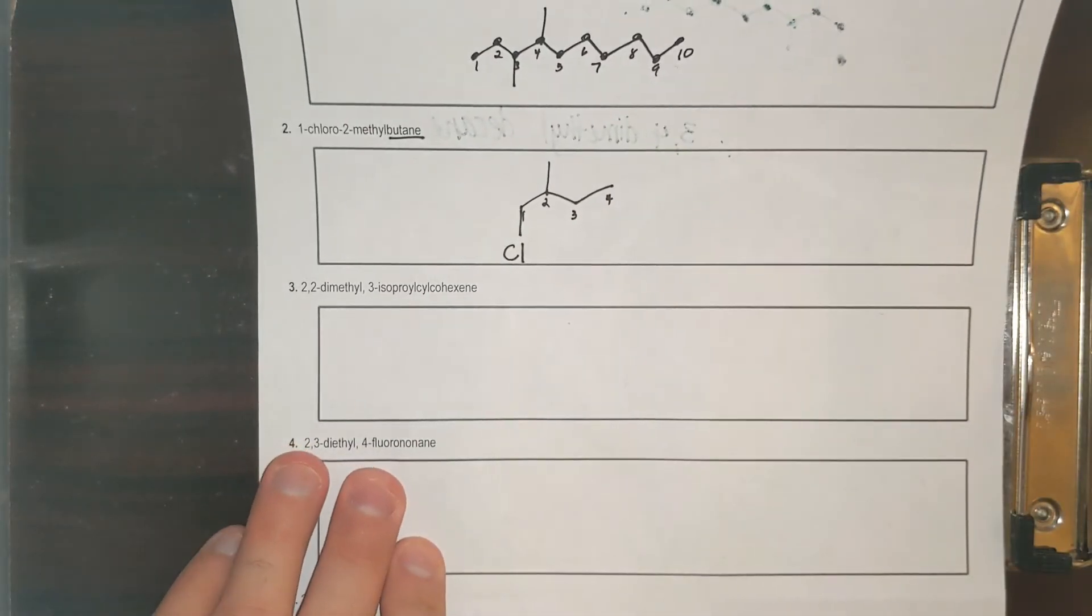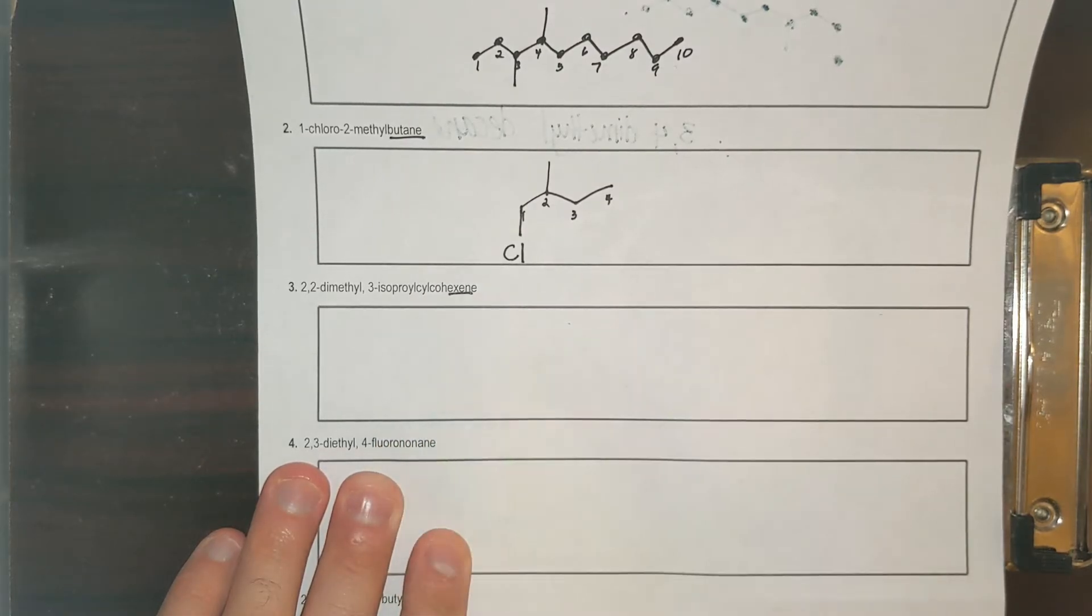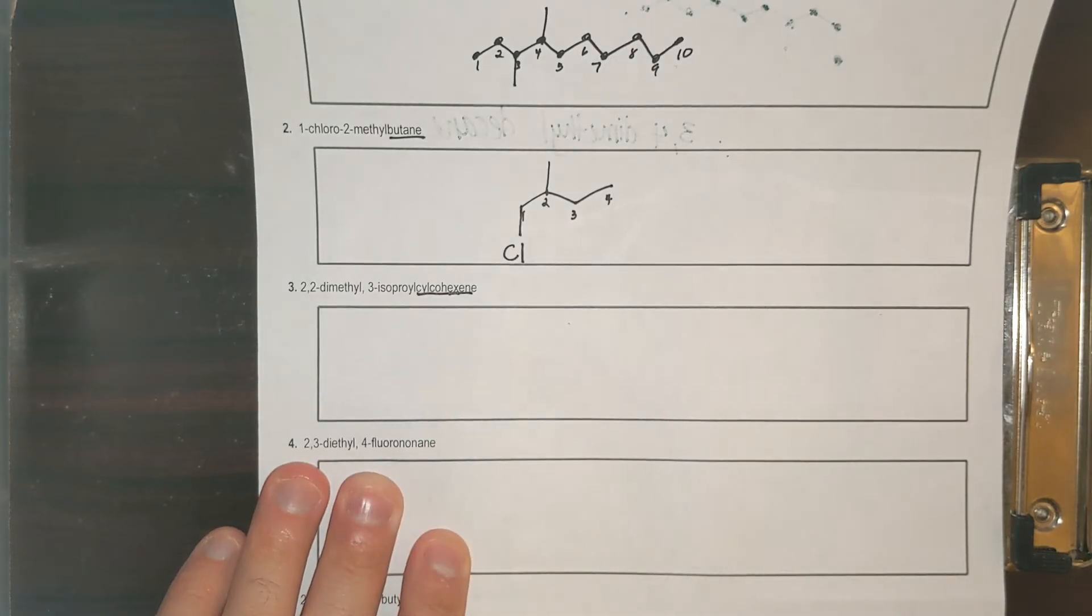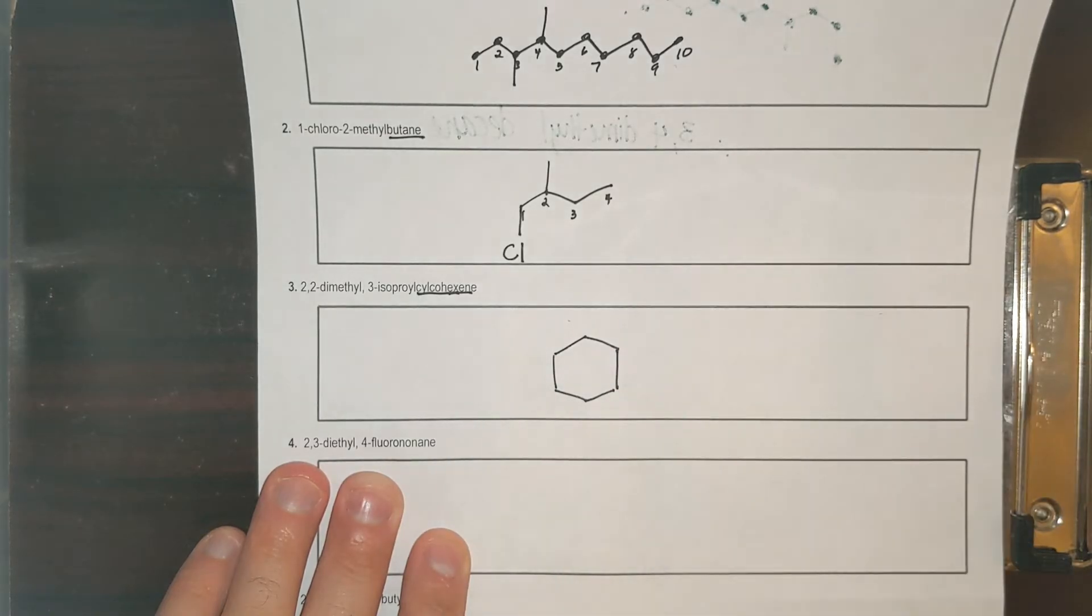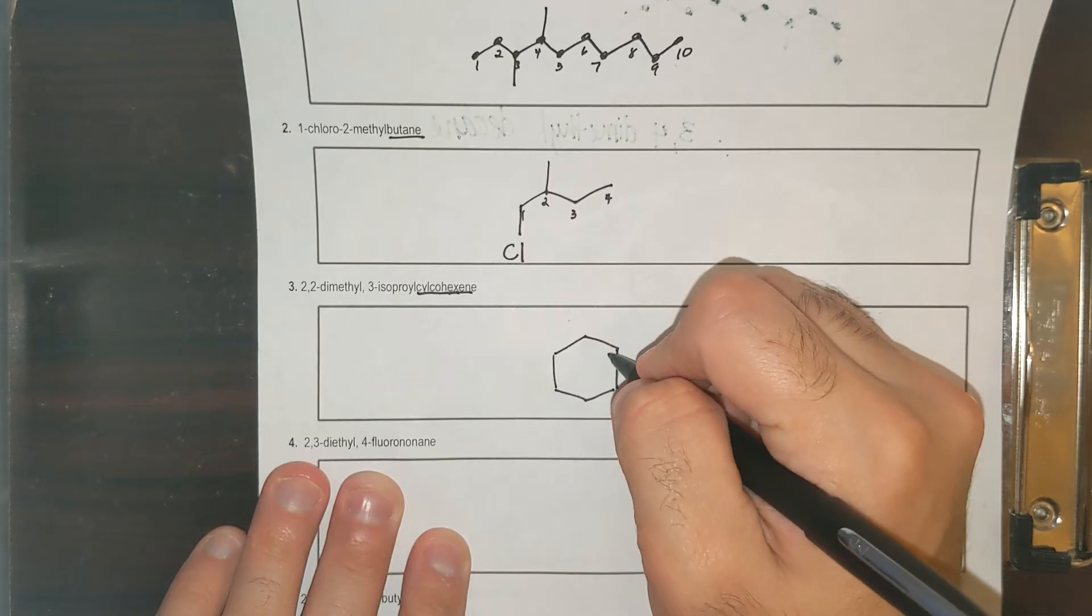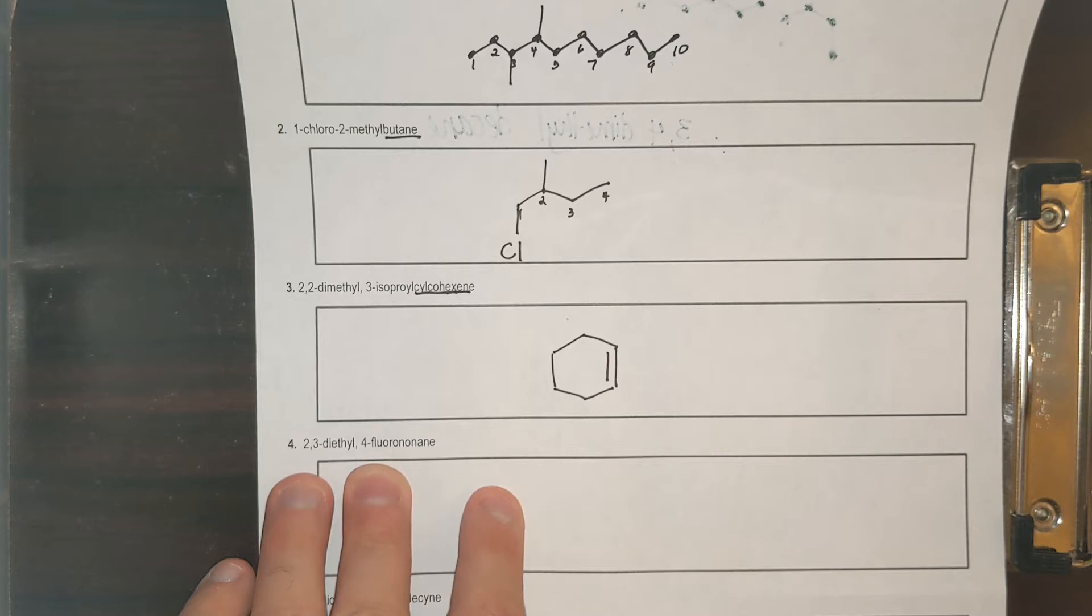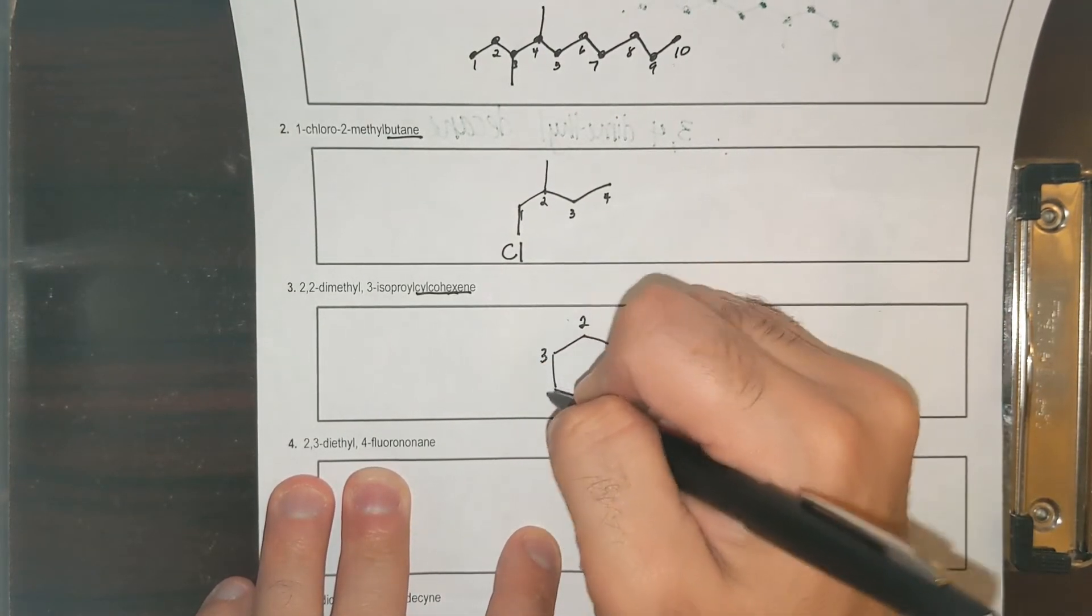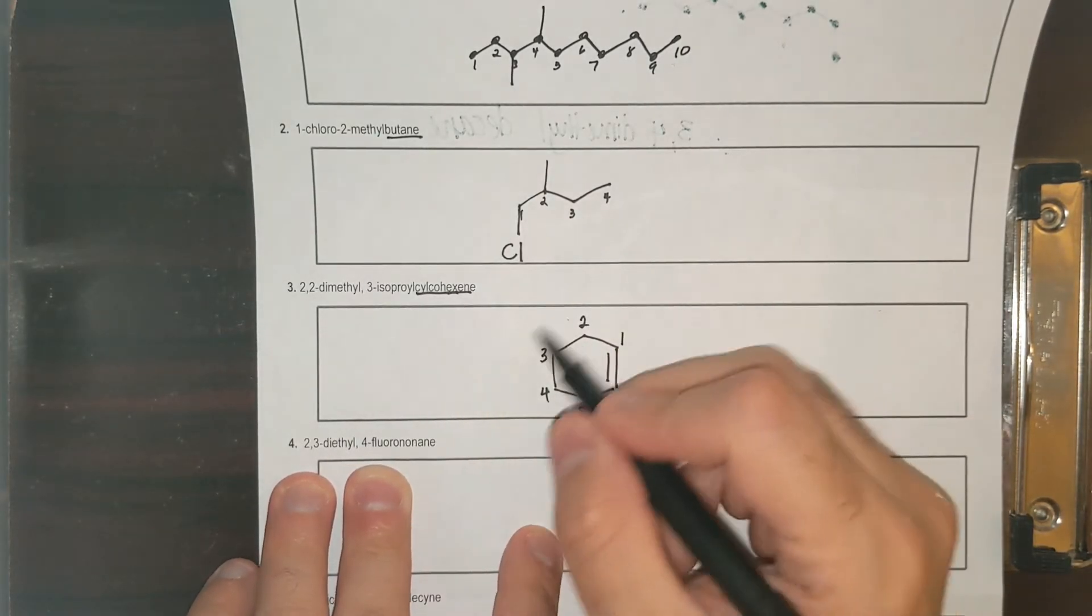Number three. It says 2,2-dimethyl-3-isopropyl cyclohexene. Cyclohexene, that's my parent name. Cyclohexene is a six-membered ring and there's a double bond somewhere. I'm going to draw the double bond here. And so now what I'm going to do is I'm going to number it, doesn't matter how. One, two, three, four, five, six. I just numbered it.